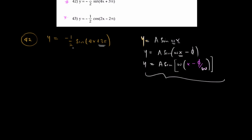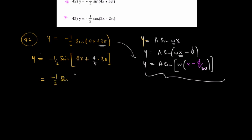Our aim is to write the given equation in that form. Starting with y equals negative half sine of (4x plus 3pi), I note that 4 is common in 4x and in 4 over 4 times 3pi. Factoring out 4 gives: negative half sine of 4 times (x plus 3pi over 4).